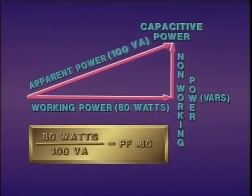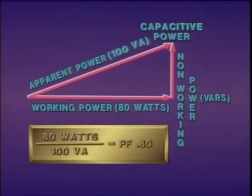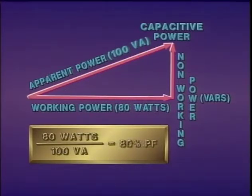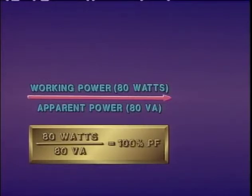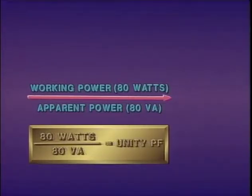Power factor can be expressed as a percent or as a decimal number. For example, if working power is 80 watts and apparent power is 100 volt amperes, the power factor would be 0.80, or an 80 percent power factor. The ideal condition is achieved when apparent power is the same as working power, for a power factor of 1.0 or 100 percent — called unity power factor. However, in actual practice, a T&D system is seldom at unity power factor.